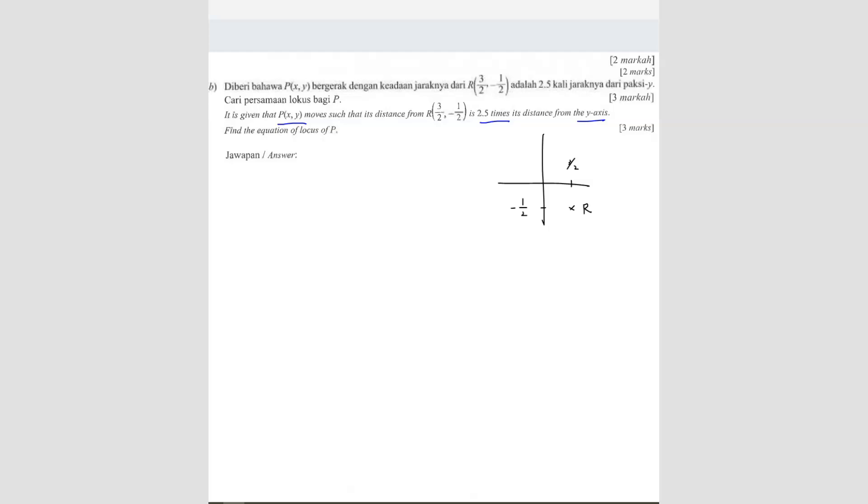P, the locus P is X and Y. This locus moves such that the distance from R is 2.5 times the distance from Y axis. So Y axis is here. How does the locus look like? The locus is going to look something like this, so that the distance between the locus and R is always going to be 2.5 times the distance from here. So we can form our equation.